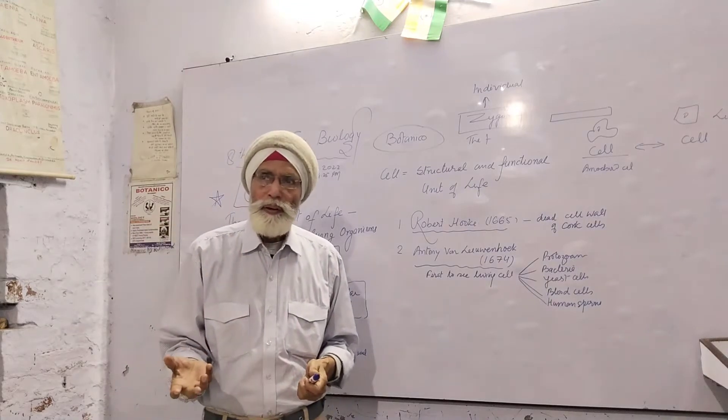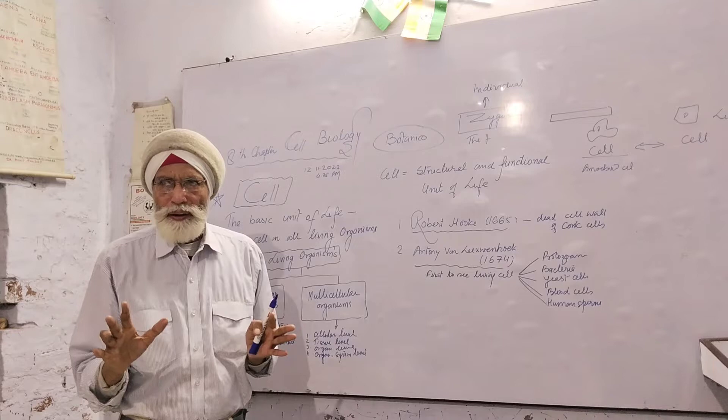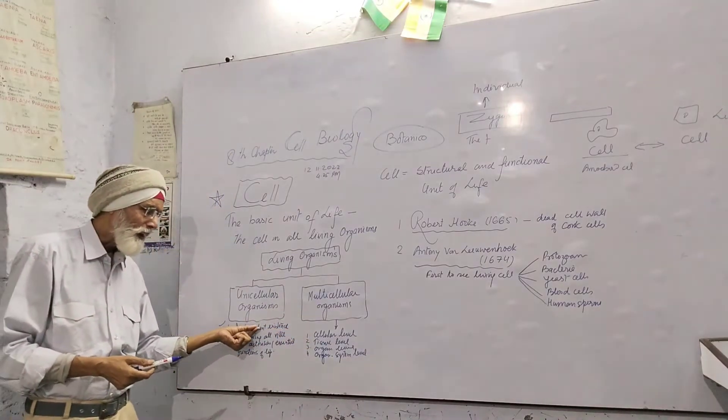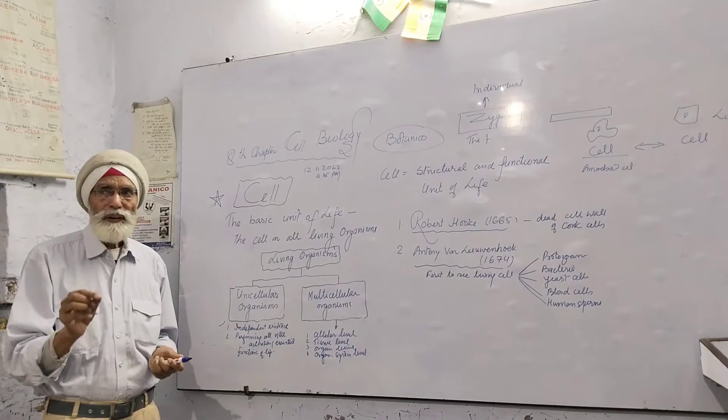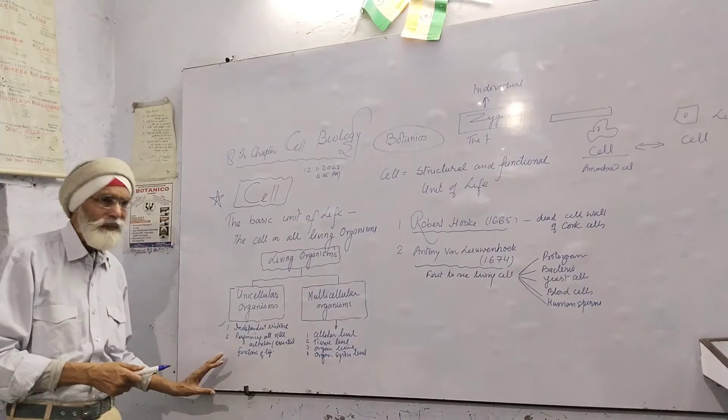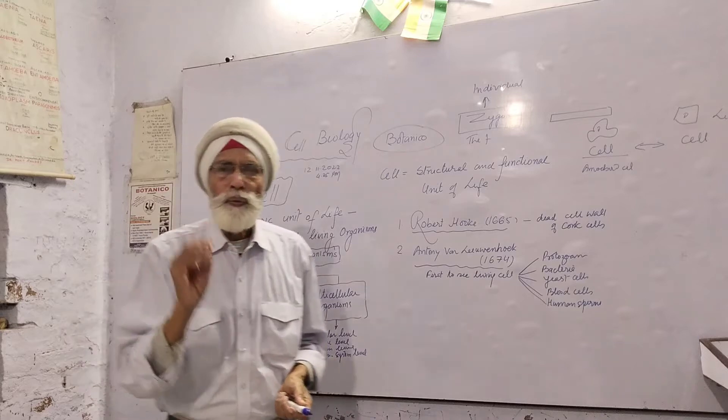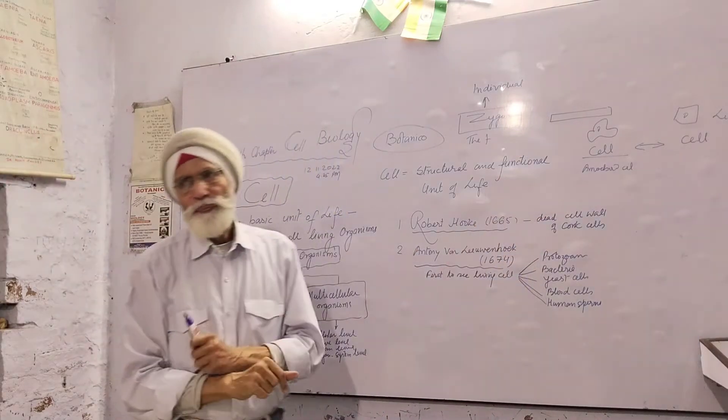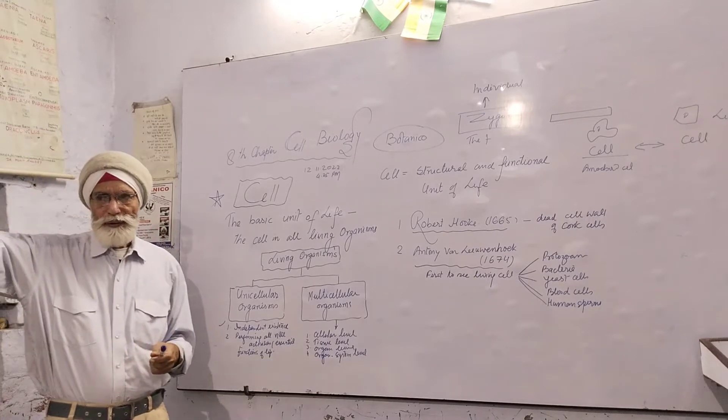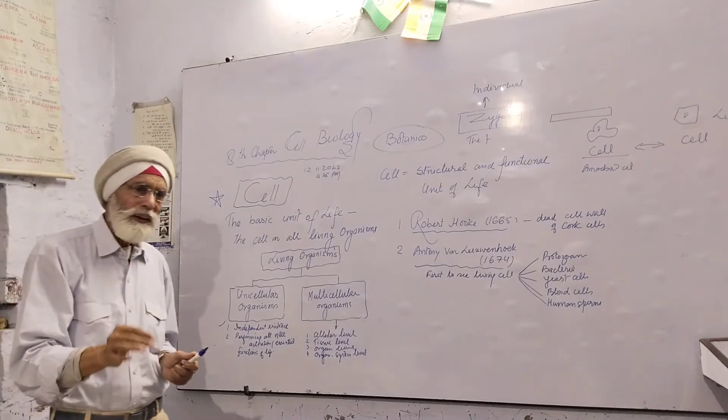Whenever you think about amoeba, protozoa, or bacteria—all are unicellular and have independent existence. They perform all essential activities of life and are called unicellular organisms. You can see examples like protozoa and bacteria. The maximum population in the world of unicellular organisms are bacteria, not amoeba.